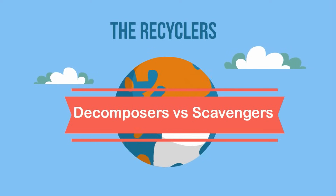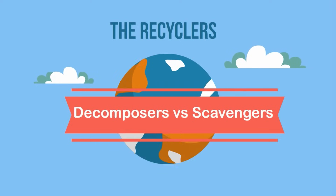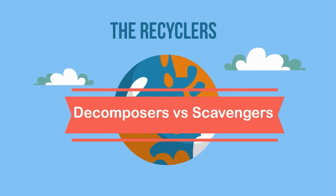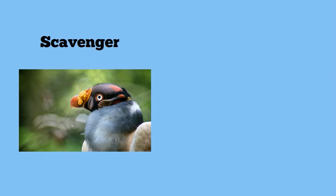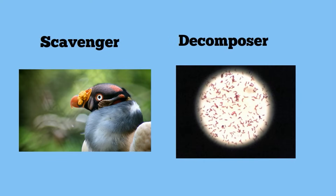How is a scavenger different than a decomposer? Both scavengers and decomposers are important for our ecosystems. They both help recycle dead and decaying matter back into an ecosystem. We would be covered up with dead stuff if we didn't have scavengers and decomposers.